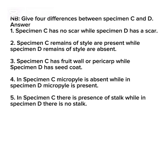Number three, Specimen C has a fruit wall or pericarp while Specimen D has a seed coat. Number four, in Specimen C micropyle is absent while in Specimen D micropyle is present. Number five, in Specimen C there is presence of stalk while in Specimen D there is no stalk. Candidates, take note.